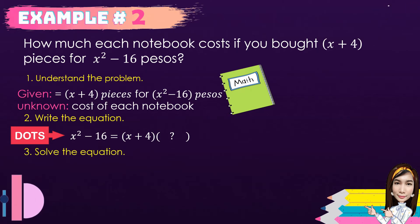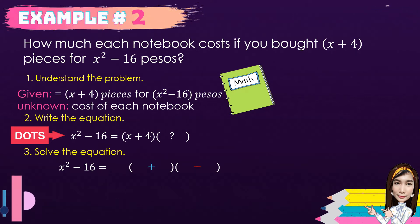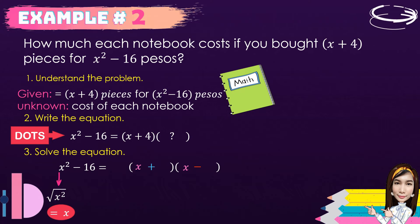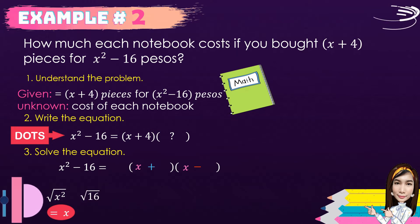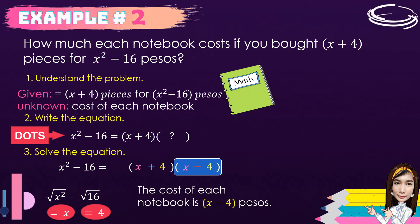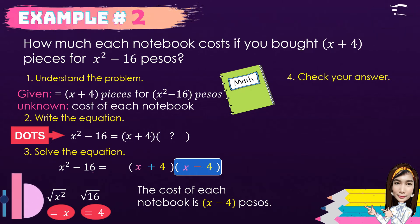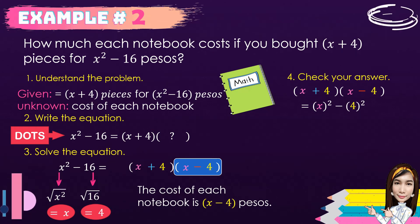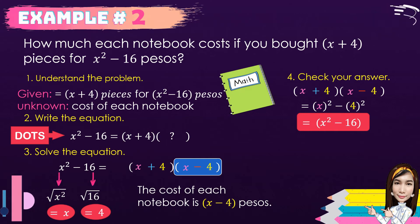Third, we solve the equation. Given the difference of two squares x² − 16, it equals the product of the sum and difference of two terms. We get the square root of x², which is x, and the square root of 16, which is 4. So (x + 4) represents the number of pieces, and (x − 4) is the cost of each notebook. To check: (x + 4)(x − 4) = x² − 16. Correct.